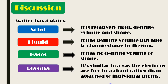The last state is plasma. It is similar to gas, but electrons are free in a cloud rather than attached to individual atoms. This is due to ionization. This is just added information — a trivia that there are actually four states of matter.